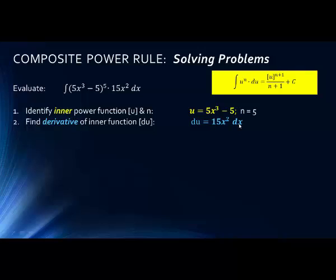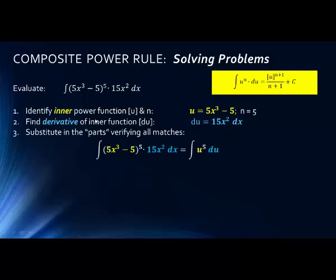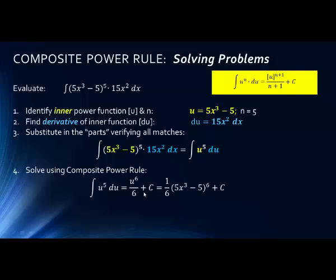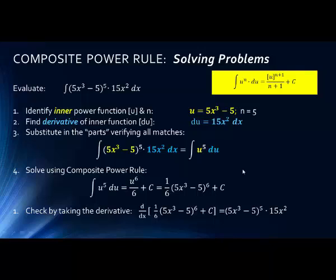So then we substitute in the parts. The original integral simply equals the integral of u⁵ du. We then apply the composite rule: we get u⁶ over 6 plus C, and then substitute back in for u. Here is our final solution. We can always check any answer to an integral by taking the derivative of the result and seeing if we get back to the original integrand — and we do here.